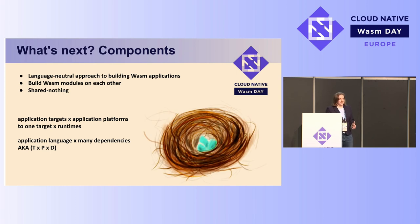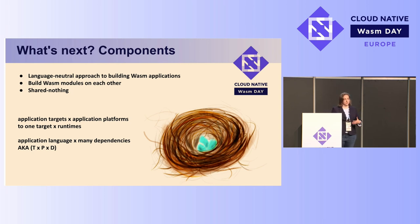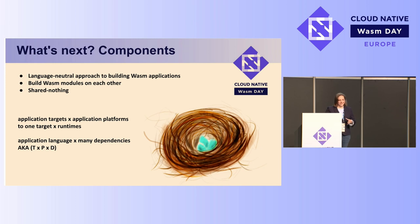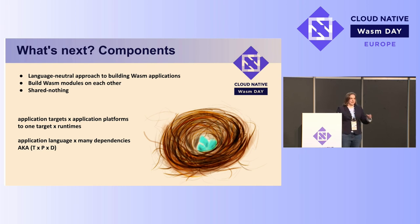Speaking of innovation, what's next? It's the component model. This is really a proposal in the space of WASI, building on top of other proposals. The idea is a language-neutral approach to building WebAssembly applications, and you're able to build them on top of each other — like branches. If you thought I was done with the bird analogies, you don't know me. As you build many different WASM modules on top of each other, we can do something truly incredible that hasn't been done before.